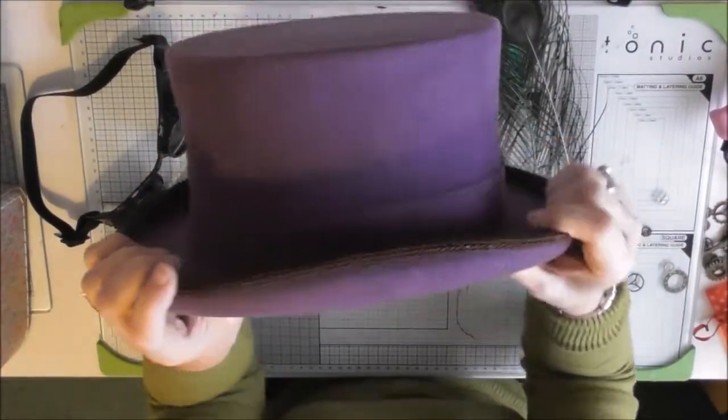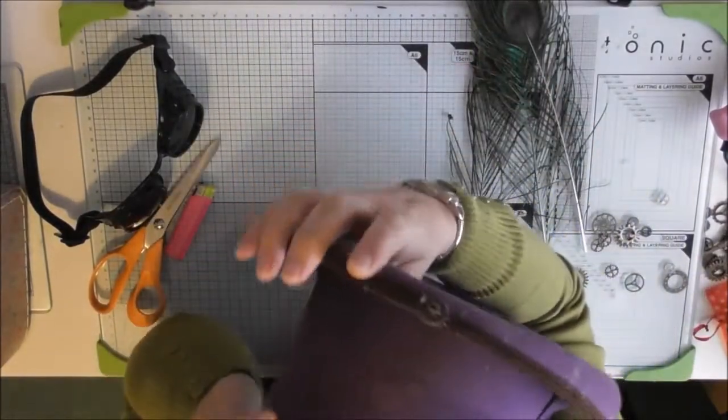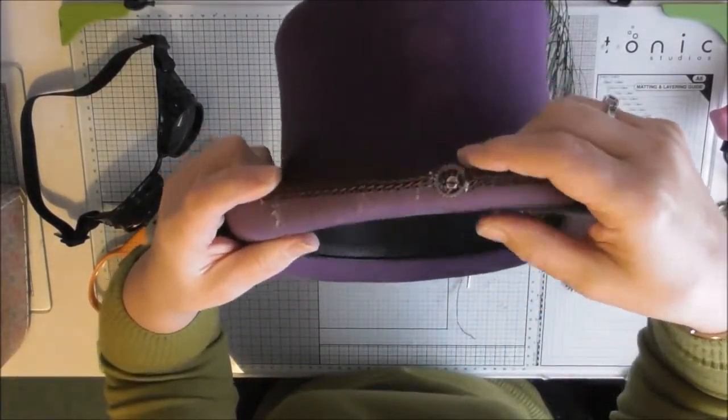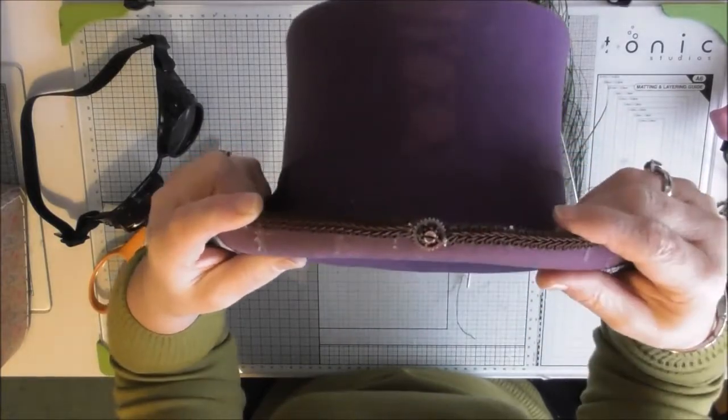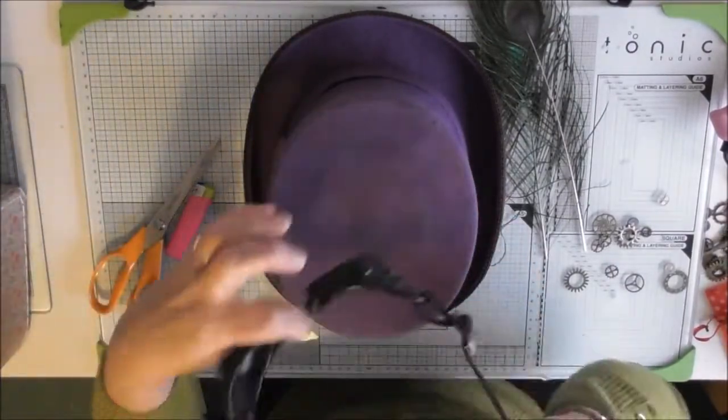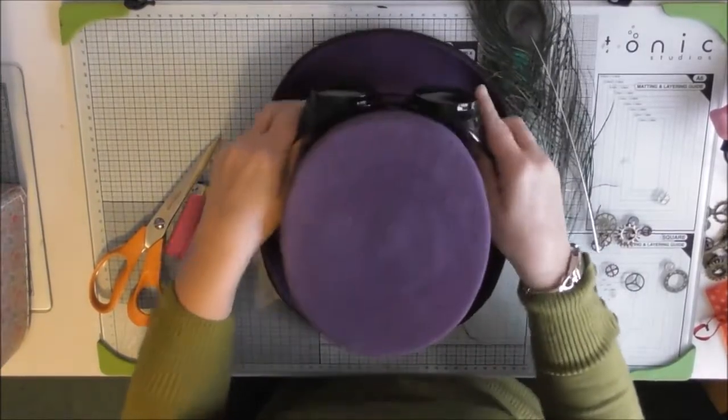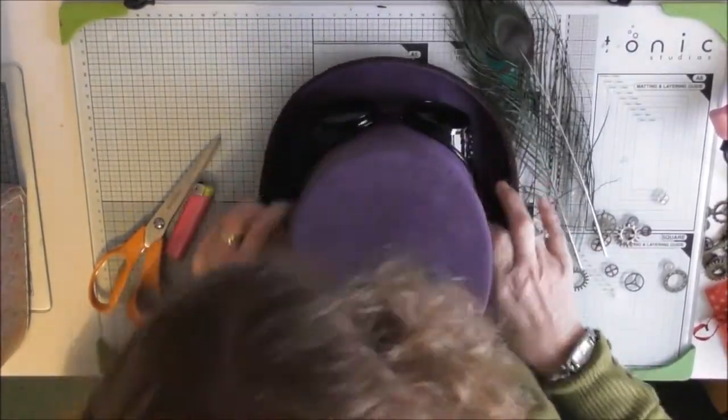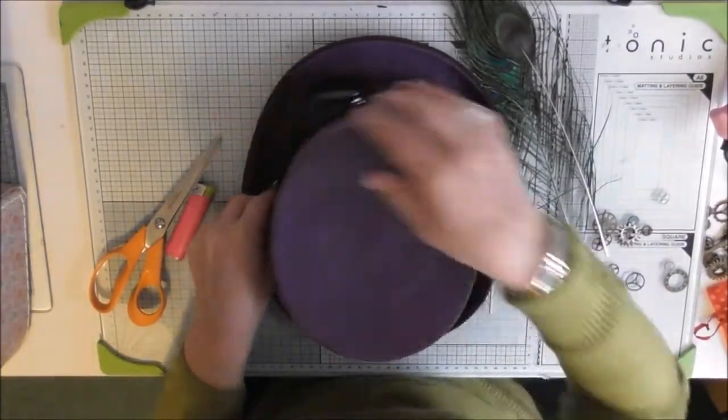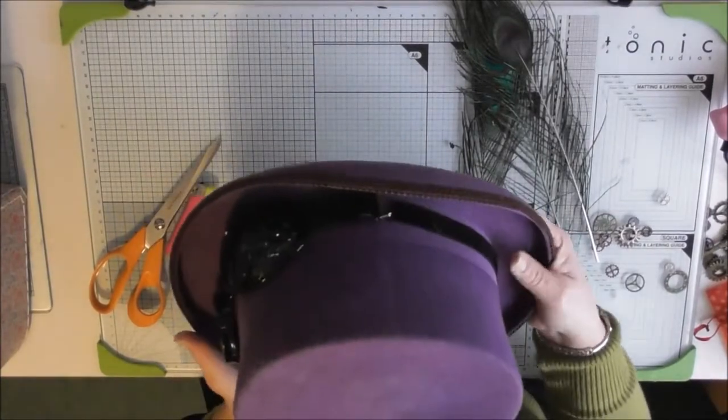So there is the trim complete. And where it didn't meet at the back I've added a little cog which will show nicely when the ribbon. So next job I want to do is add my goggles. And I'm just going to place that around. There we are. So there's my goggles all in place.